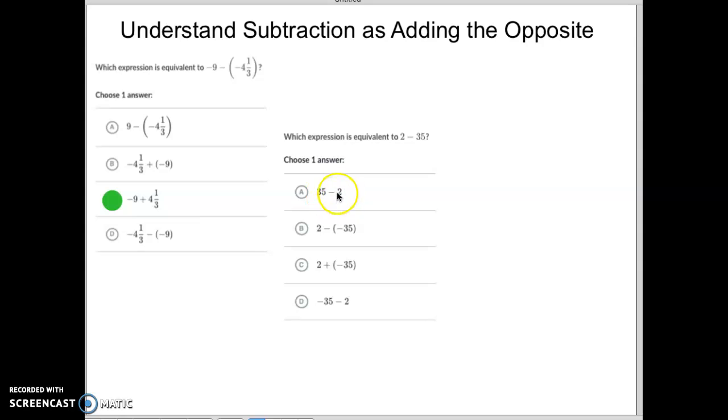So, nope, that's not plus negative 35. That one is not plus negative 35. This one is plus negative 35, so that could work. And that one is not plus negative 35. So, again, letter C. Letter C is on a roll right now.